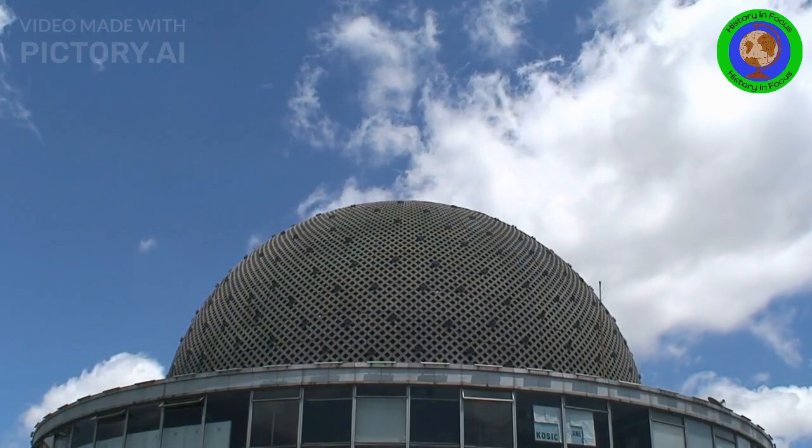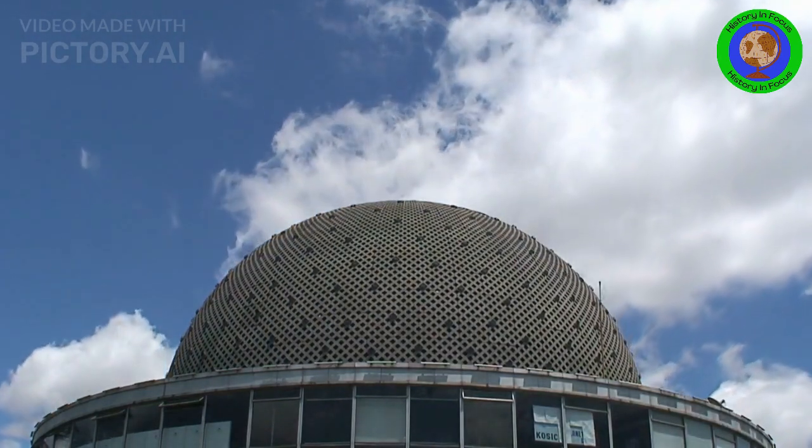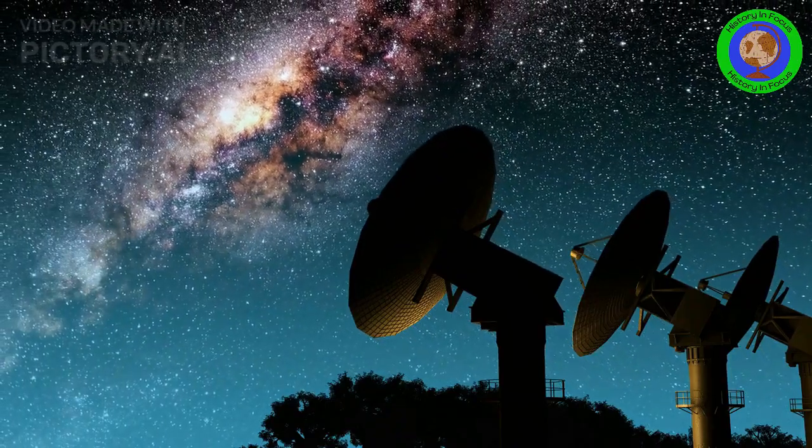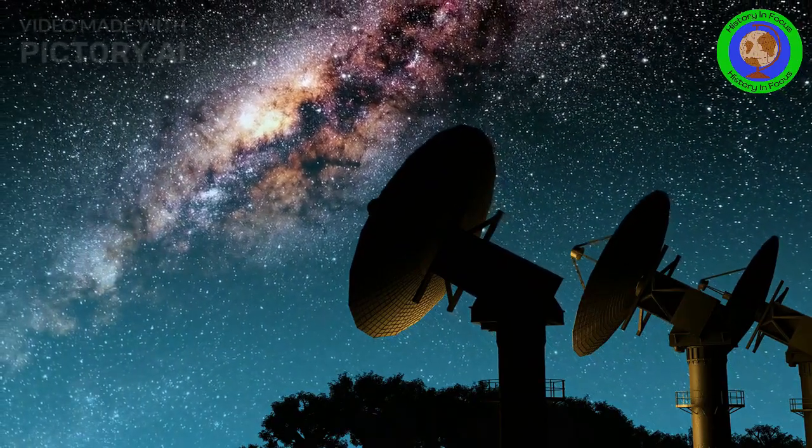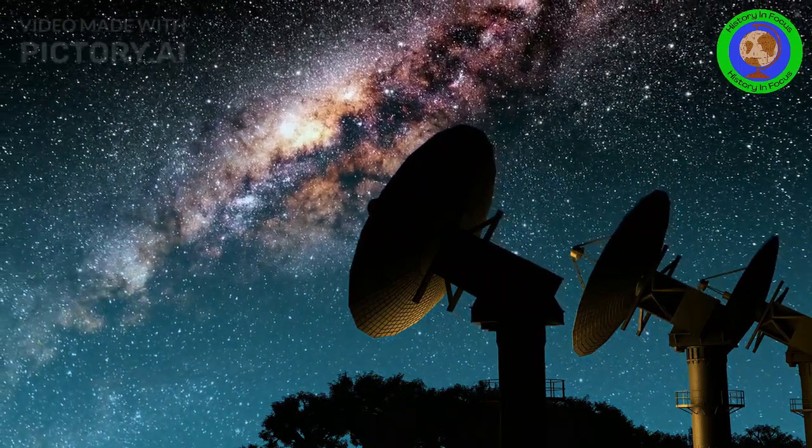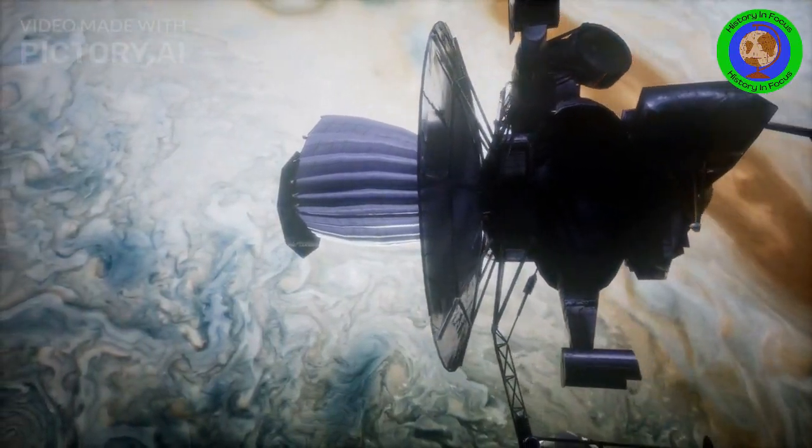Galileo Galilei, 1564-1642. Galileo made important contributions to physics and astronomy. He improved the telescope and used it to make groundbreaking observations, including the moons of Jupiter and the phases of Venus. Galileo's support for heliocentrism brought him into conflict with the Catholic Church.